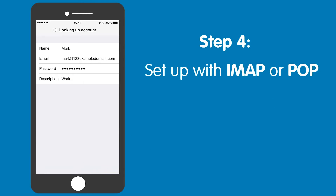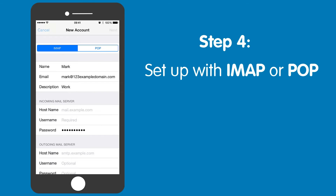Step four: you can now choose to set up the mailbox with IMAP or POP. For more information about the two protocols, check out this video. We recommend that you use IMAP for your iPhone.